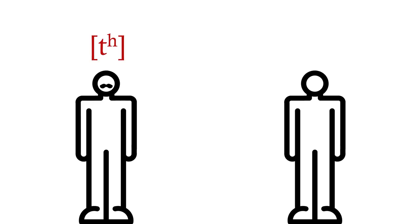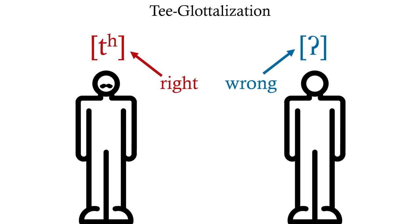This glottal stop is a phone in its own right and is used as a distinct sound in many languages. And this process of replacing the alveolar stop with the glottal one in English is very common, and it's called T-glottalization. It's not an incorrect pronunciation, it's a different pronunciation.